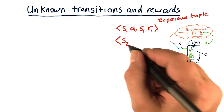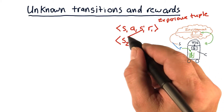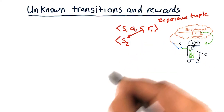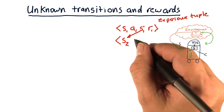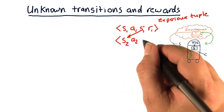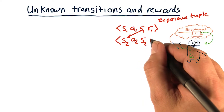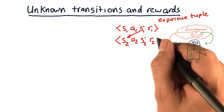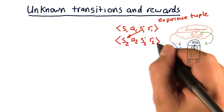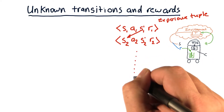Now we find ourselves in a new state S2 — that's where we found ourselves. We take some new action A2, we end up in some new state S2 prime, and we get a new reward R2. And we do this over and over again, gathering experience tuples all along the way.